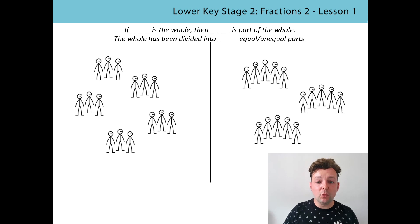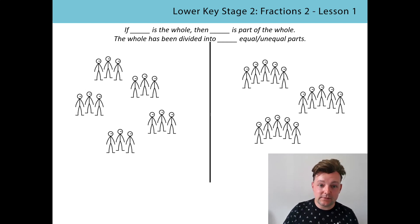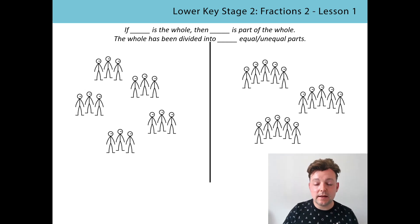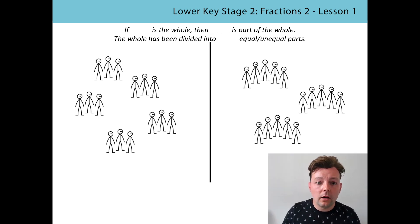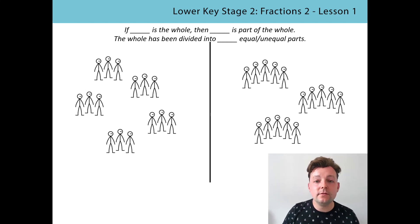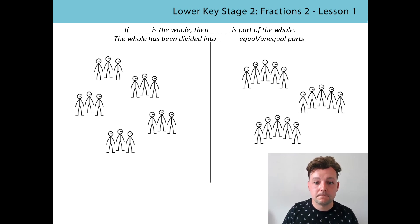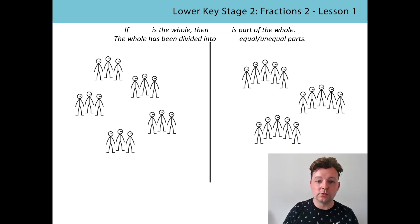Here we can see both of those questions side by side. On the left hand side of the screen, you can see that the whole is 15, and on the right side of the screen, the whole is also 15 children. But on the left side there are three children in each part, and on the right side there are five children in each part. Have one more go at reading the stem sentence for each of those pictures.